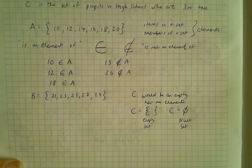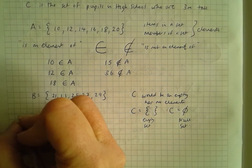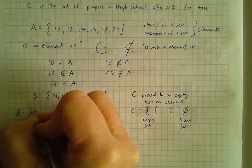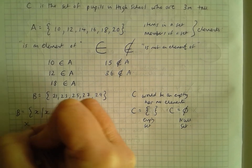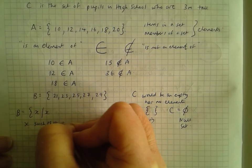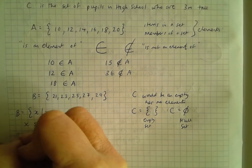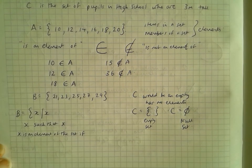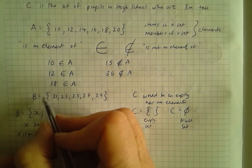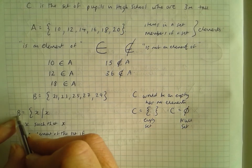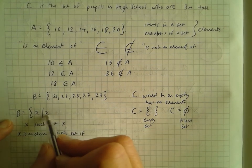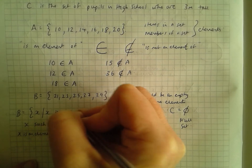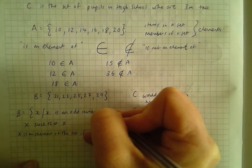How do we define sets by rule? There's a special way of writing it. We write B equals, then curly brackets, X, a vertical line, and X — which in English reads 'X such that X'. That means 'X is an element of the set if...'. So set B equals the set of elements X such that X is an odd number between 20 and 30.